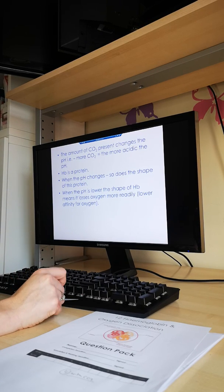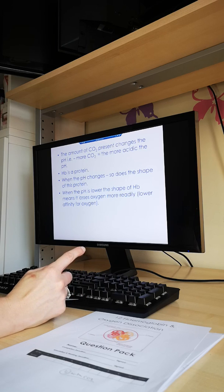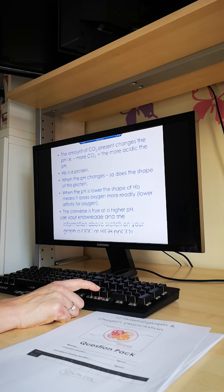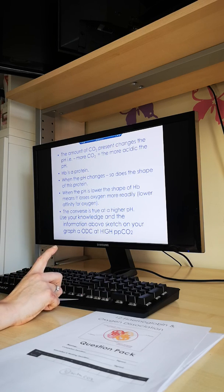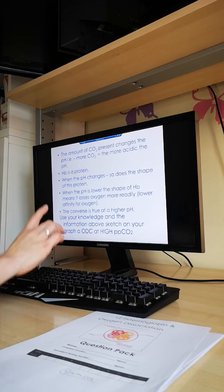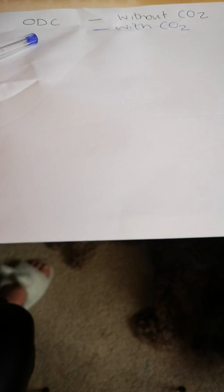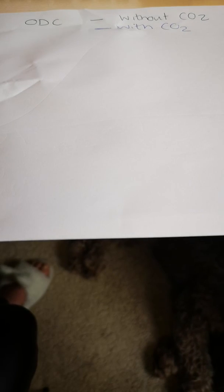When the pH is lower, the changed shape of haemoglobin means it loses oxygen more readily — it unloads — so it has a lower affinity for oxygen. The converse is true at a higher pH, which corresponds to a lower carbon dioxide concentration. Now the challenge: use your knowledge of the graph and this information to sketch the effect of a high partial pressure of carbon dioxide on the oxygen dissociation curve.